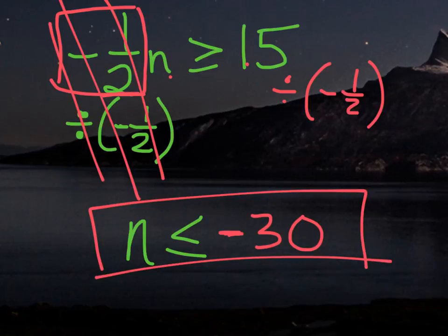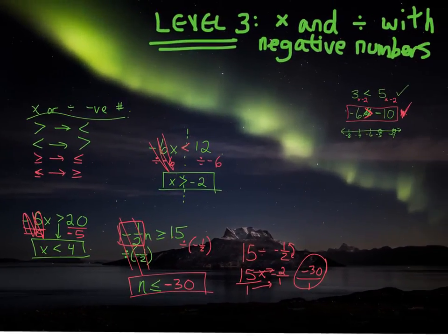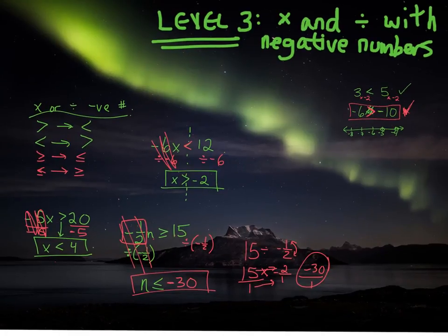And that would be it for this video. Take some time to practice the questions from the worksheet. For level 3, you actually do have to complete the entire puzzle page. Hopefully you'll remember as you're going through it to only flip the sign if you're multiplying or dividing by a negative number. If you're not doing that, then don't change the direction of the symbol. Good luck.